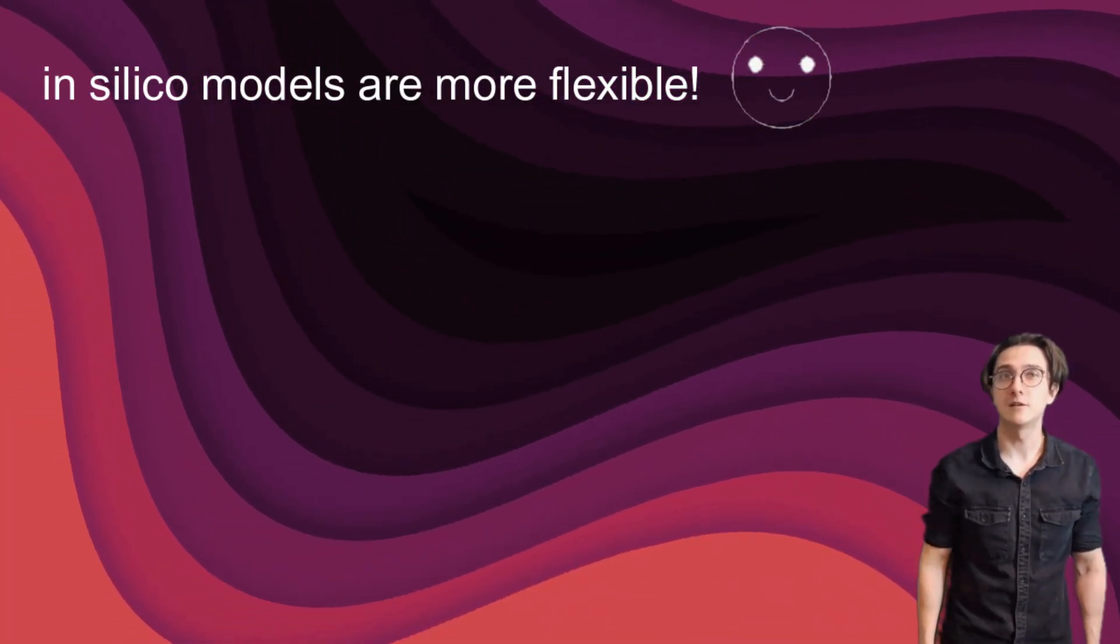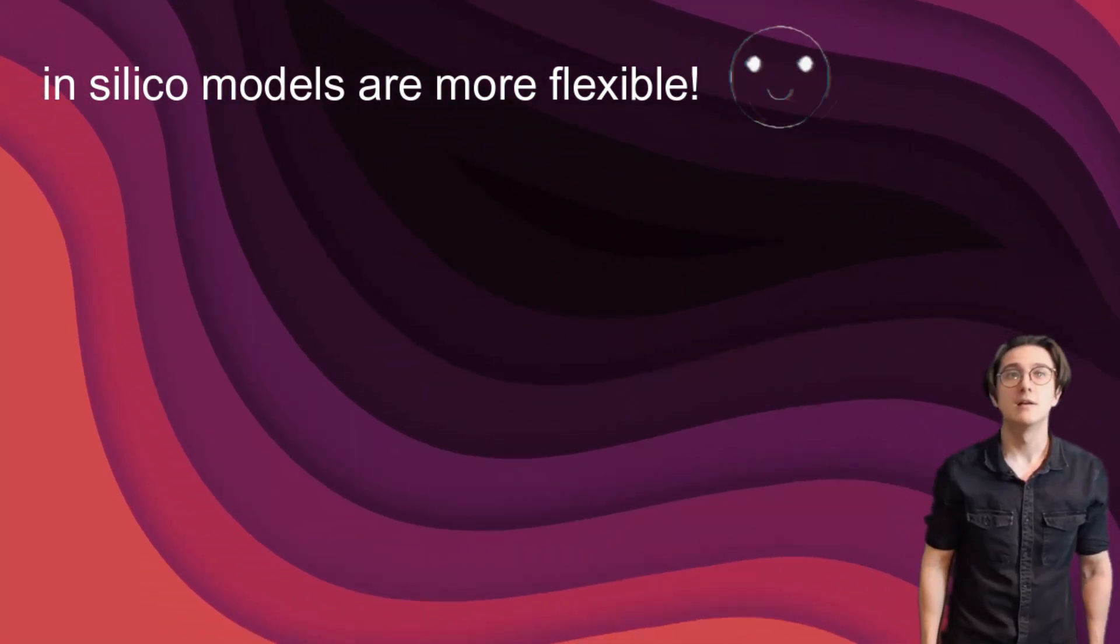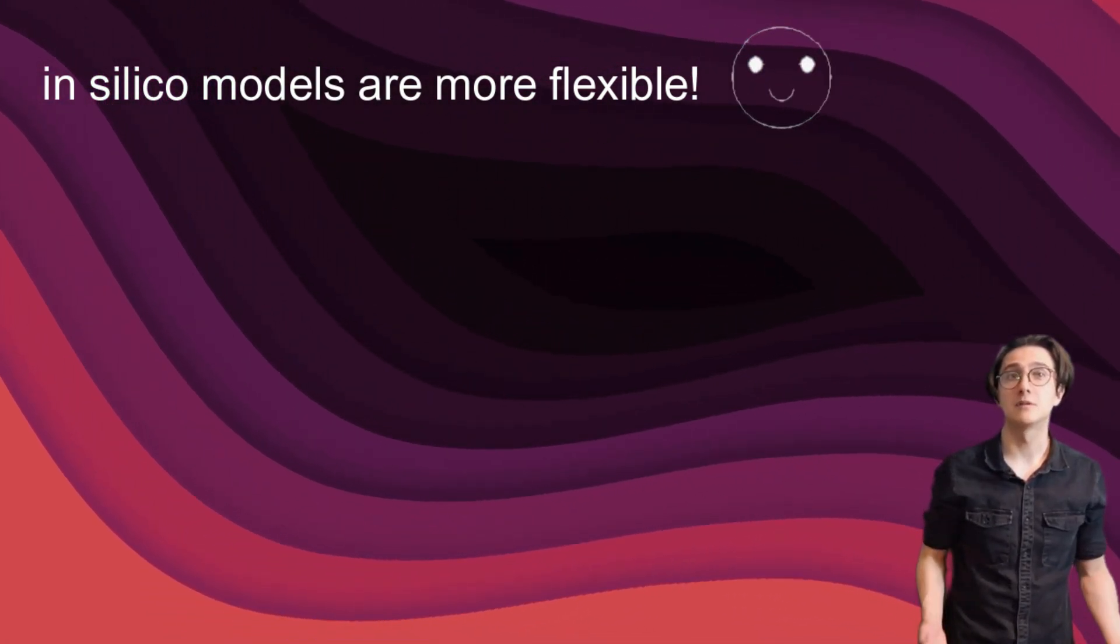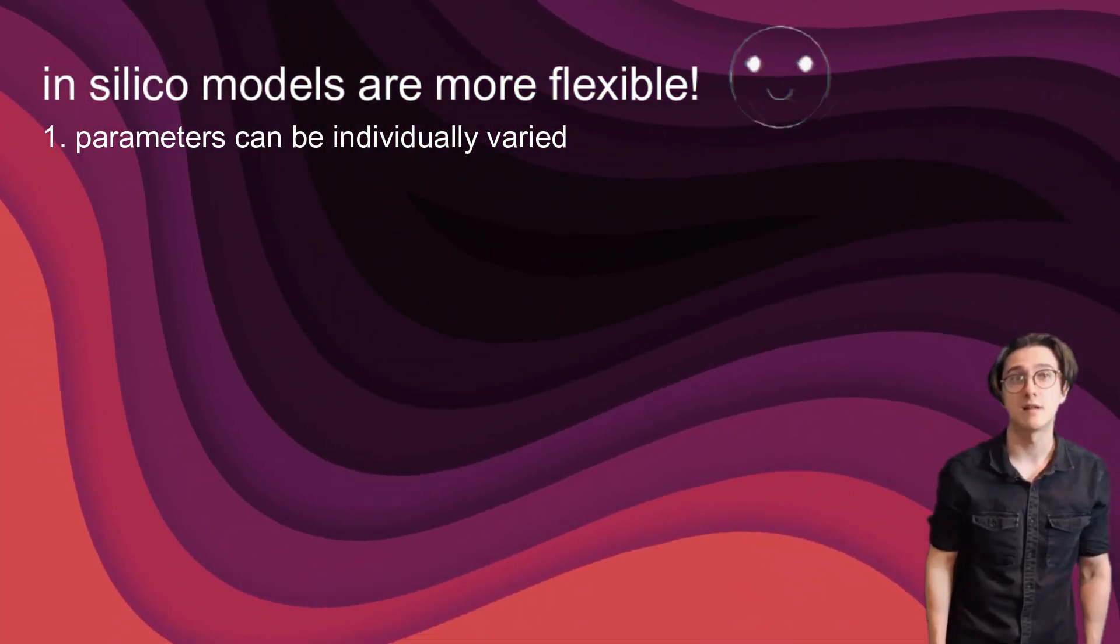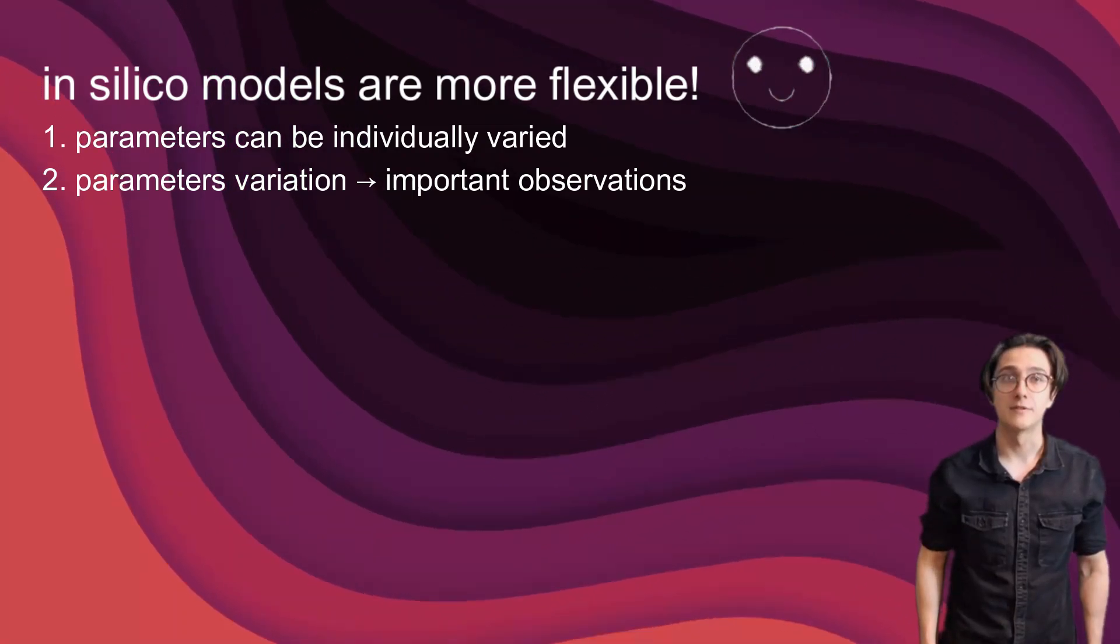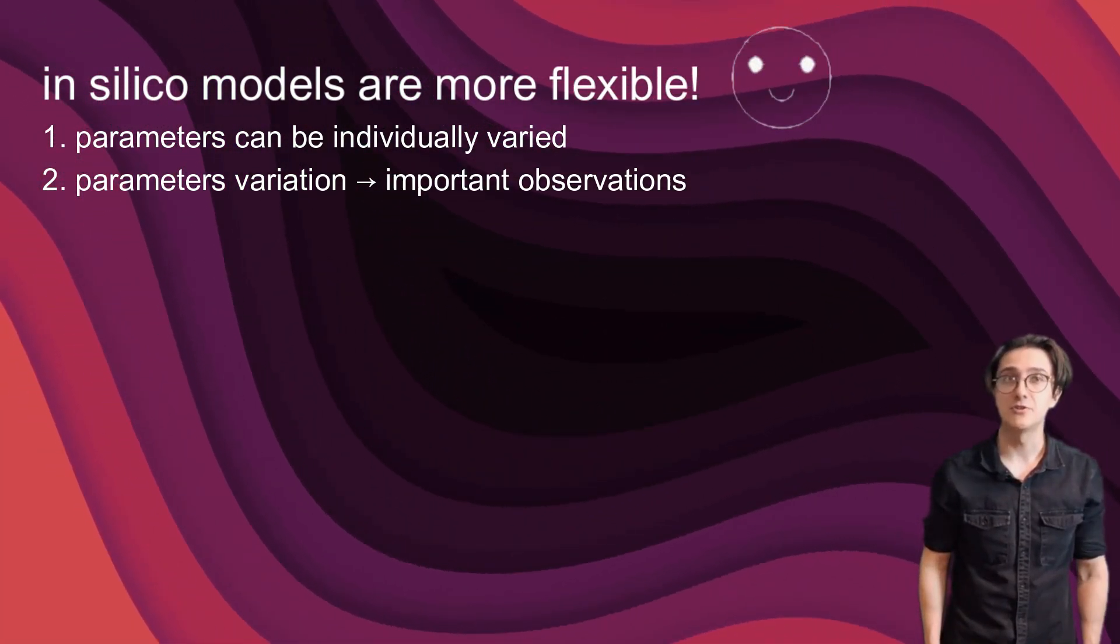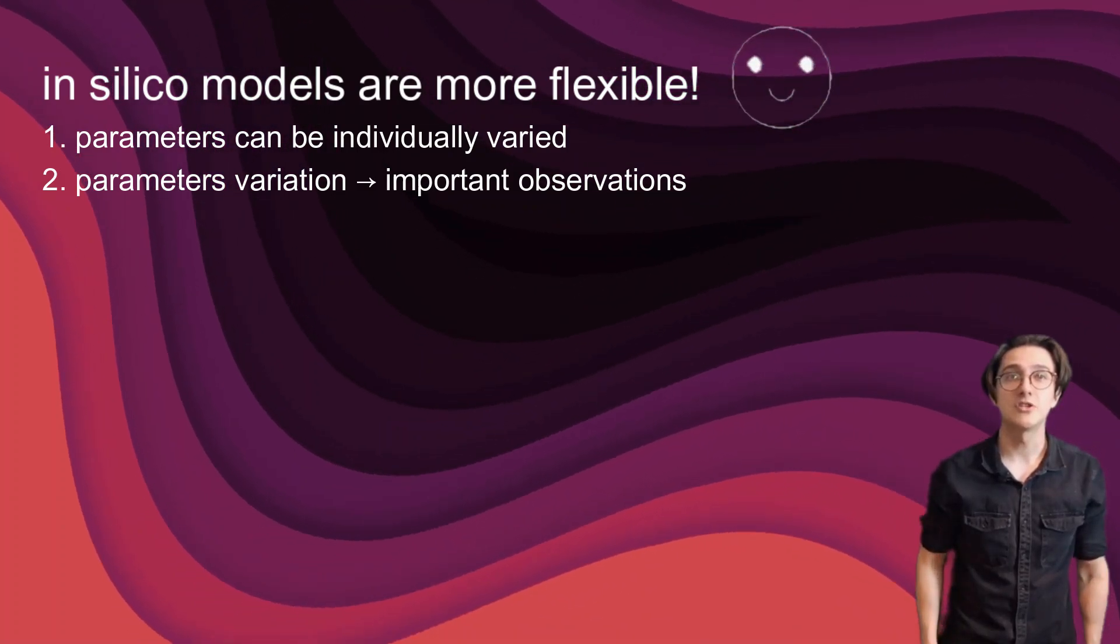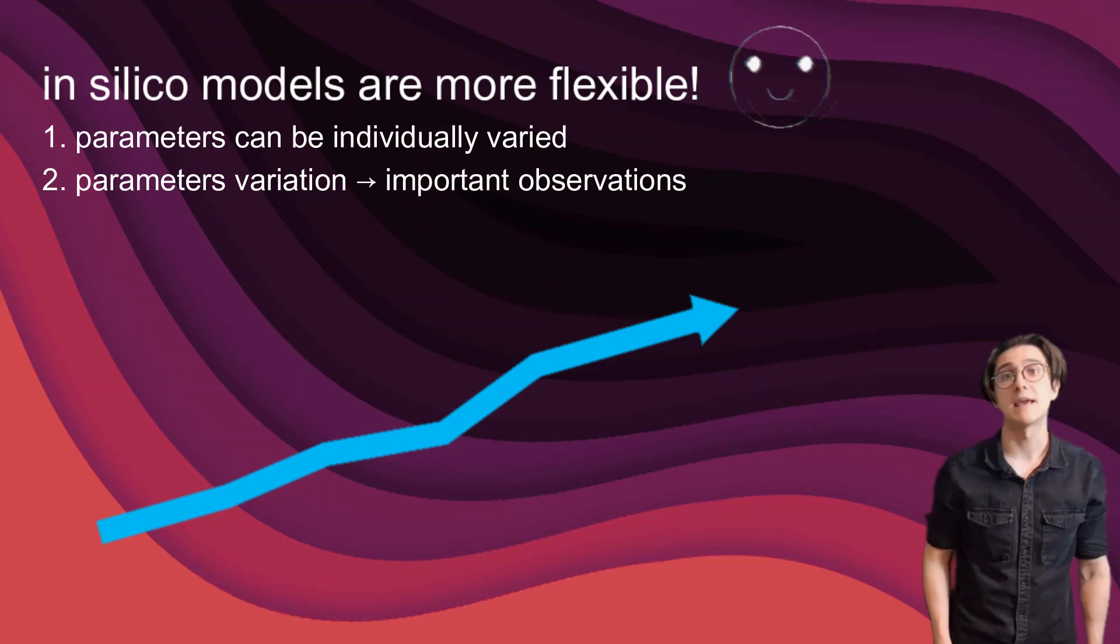Fortunately, in silico models overcome such limitations through a manipulable environment. Such computational models enable clear isolation and investigation of various mechanisms driving glial cell behavior. Systematically varying model parameters could result in important cellular morphogenesis-related behavior observations. This simulation has the potential to increase the understanding of complex feedback loops resulting in emergent behavior.